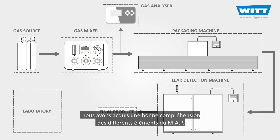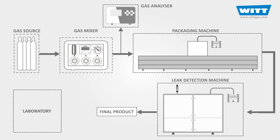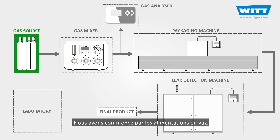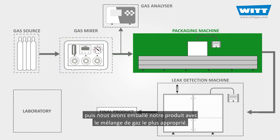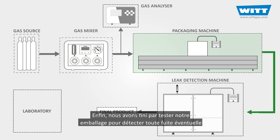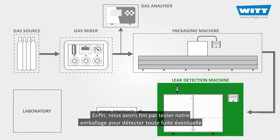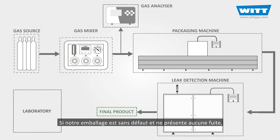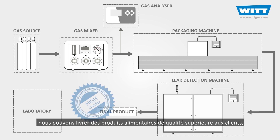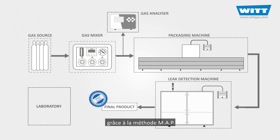In this video, we have gained a good understanding of the different elements of the MAP system. First, we started with the gas sources. Next, we made our desired gas mixture using the gas mixer, and then packed our product with the most suitable mixture of gases. Finally, we tested our package for any possible leakage with the leak detection machine. If our package is flawless and has no leaks, we can deliver top quality food products to customers, thanks to the MAP method.